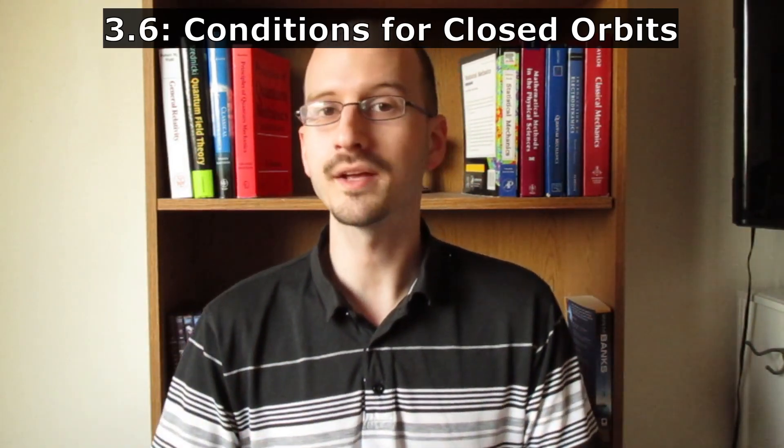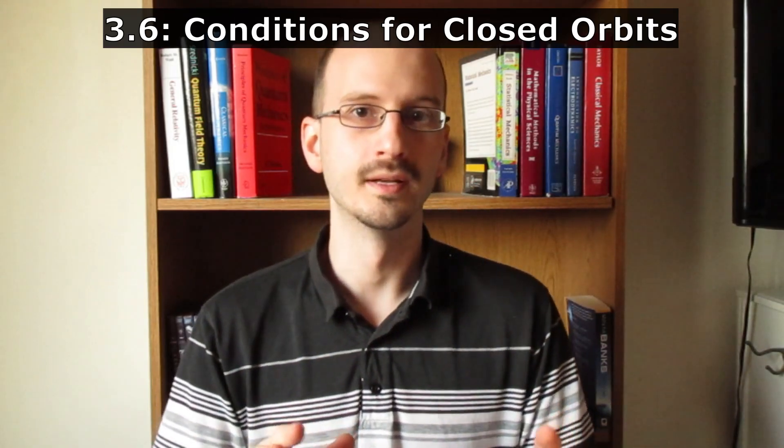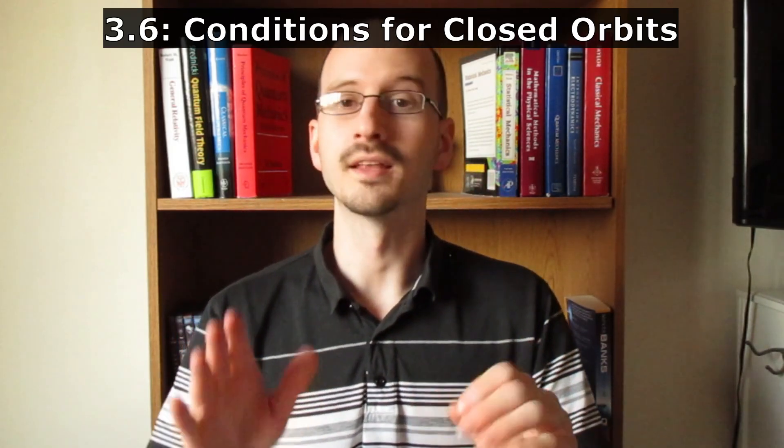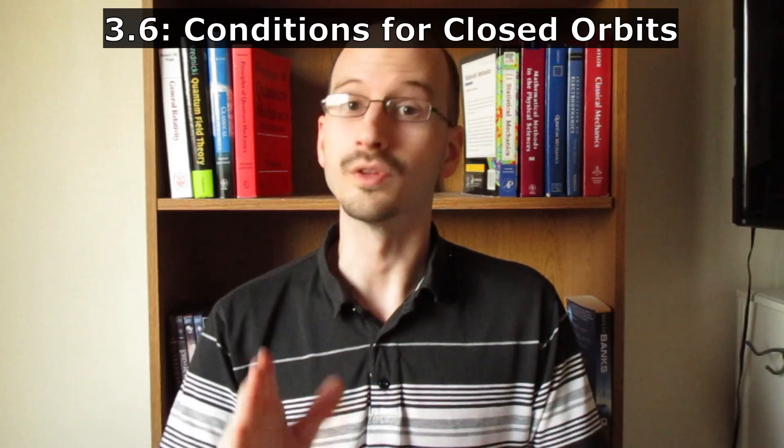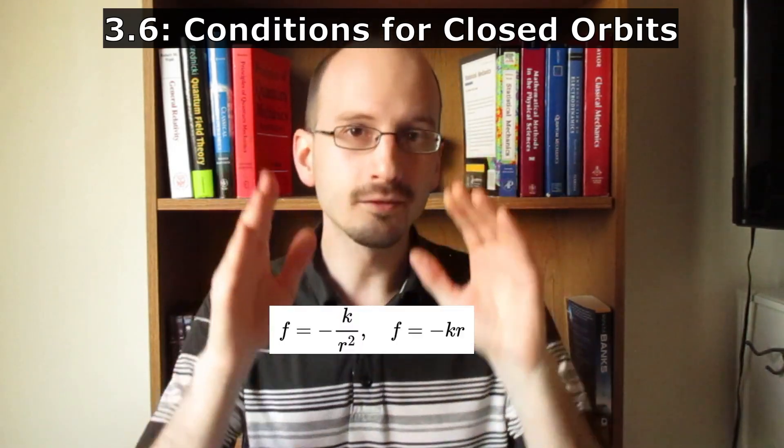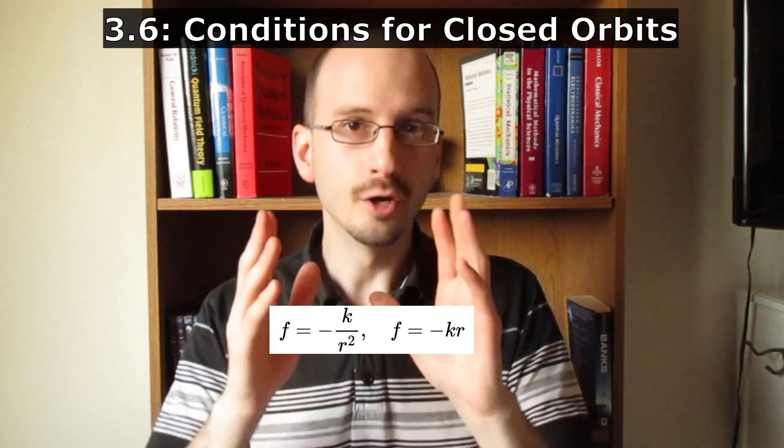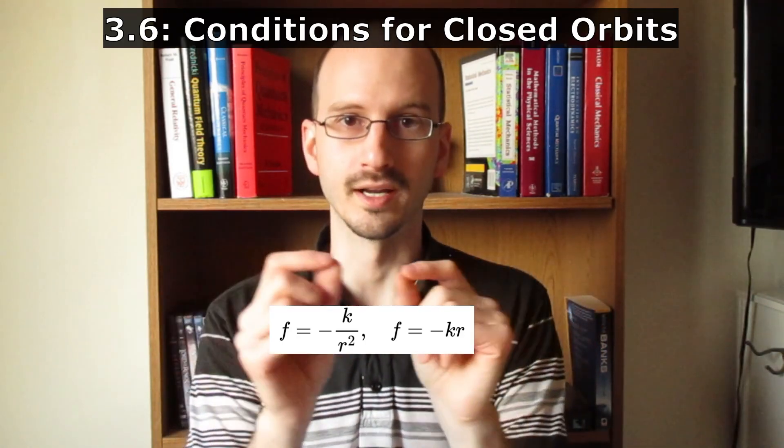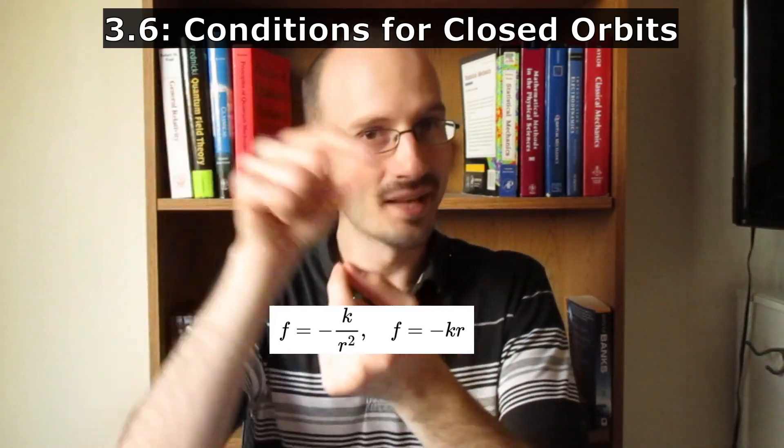This section goes into a lot of heavy math to prove Bertrand's theorem. The only central forces that lead to closed orbits with no precession are inverse square forces like gravity, electromagnetism, and Hooke's law, the force of springs. Every other central force function, when you do the calculation, will not come back to its original point.